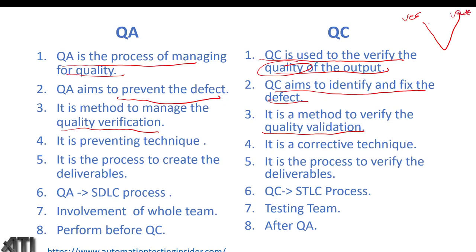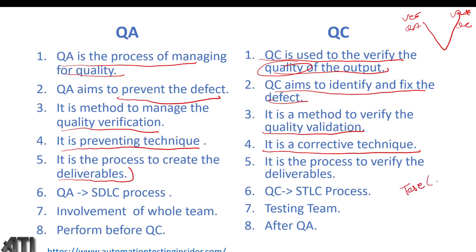The left side of the V-model is verification — quality assurance; the right side is validation — quality control. QA is a preventive technique that prevents defects. QA helps create deliverables: the QA team prepares all templates such as test case summary templates, test case documents, test plan, defect report, and defect summary report.